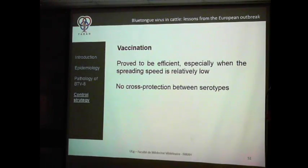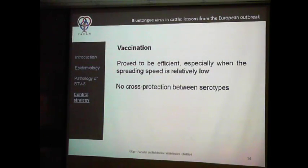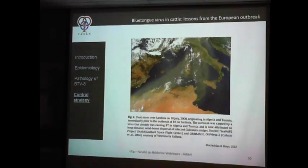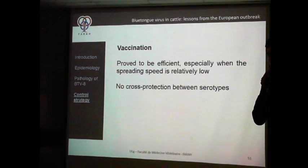Vaccination proves to be efficient. Similarly to other vector-borne diseases, the presence of neutralizing antibodies in the mother would protect the fetus from infection — this is really important. But keep two things in mind: first, if the spread of the outbreak is fast you will have no time to vaccinate. And keep in mind that there is no cross-protection between serotypes, which is really a problem because you need extremely fast diagnosis of the first case and characterization of the serotype to ensure the available vaccine will be effective.